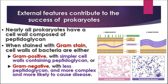Almost all prokaryotes, especially the eubacteria, have a cell wall composed of a substance called peptidoglycan — a protein and carbohydrate complex present only in the cell walls of eubacteria. When stained with the gram staining process, the cell walls are either gram positive or gram negative. Gram positive ones have a simpler cell wall with a lot of peptidoglycan, and they stain dark blue or purple. Gram negative ones have less peptidoglycan but a more complex cell membrane — an inner and outer membrane with lipopolysaccharides — and they stain pink under the gram staining process.